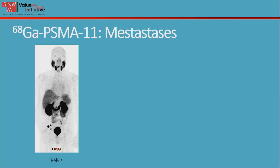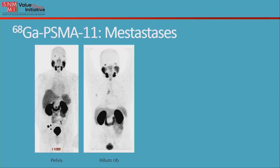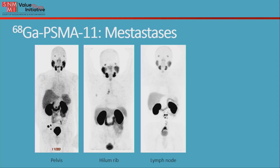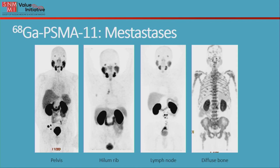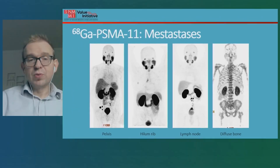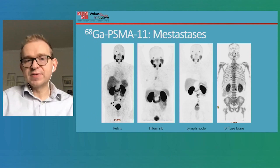Now let's look at what it looks like when patients have spread outside the prostate. In the first image on the left, there are three additional spots in the region of the pelvis, indicating metastatic deposits. In another patient, there are sites of uptake in the chest — lesions in the bone and lymph nodes. Another patient shows multiple lymph nodes with increased uptake in the pelvis and abdomen. Finally, on the right side, is a patient with diffuse spread to their bones, showing increased uptake throughout their skeleton — examples of positive scans that have isolated sites of metastatic disease.